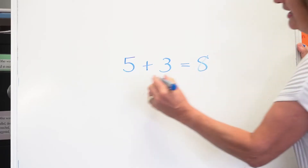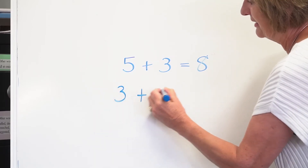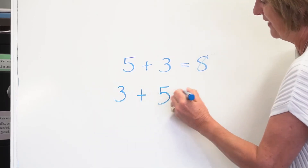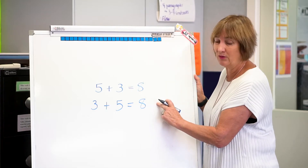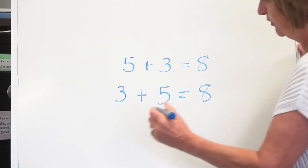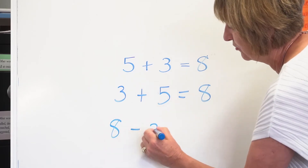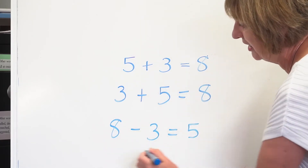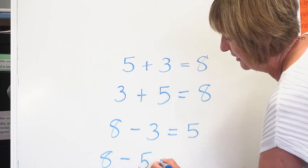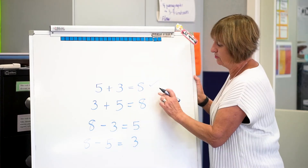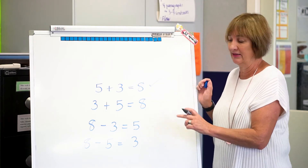Once we know one fact, we teach the children that we automatically get three facts for free. If we know 5 plus 3, we know 3 plus 5. If we know that fact, we know that 8 take away 3 equals 5, and we know that 8 take away 5 equals 3. So once you know this one, that's the basis for automatically knowing these facts.